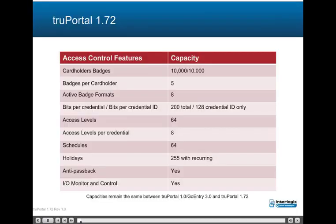Access control features and capacities: Cardholders and badges — up to 10,000. Up to 5 badges per cardholder. 8 active badge formats. Card formats up to 200 bits total with a 128-bit credential ID. Up to 64 access levels. Up to 8 access levels per credential. Up to 64 schedules. Up to 255 holidays, with up to 75 days and recurring holiday support.